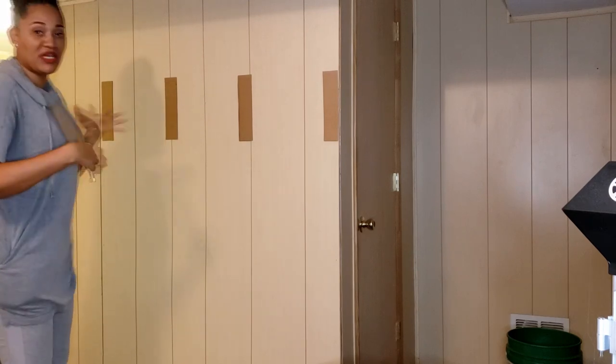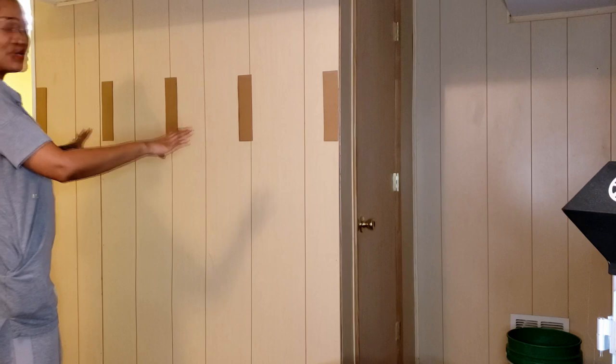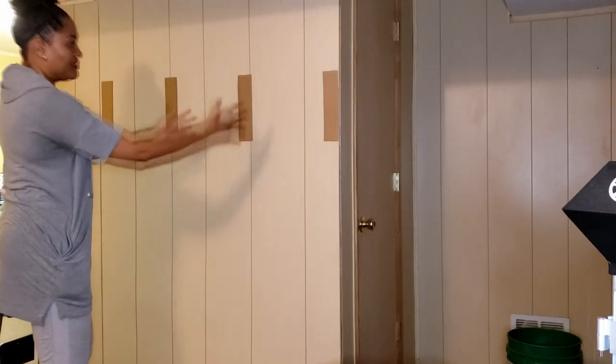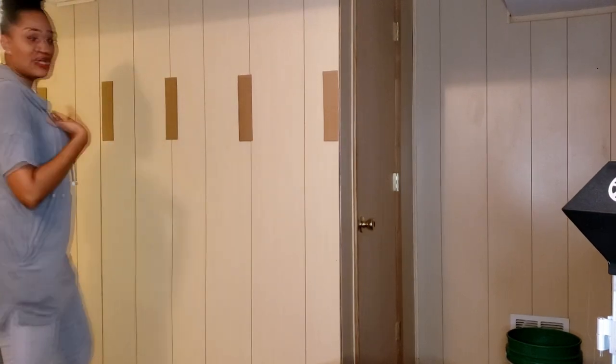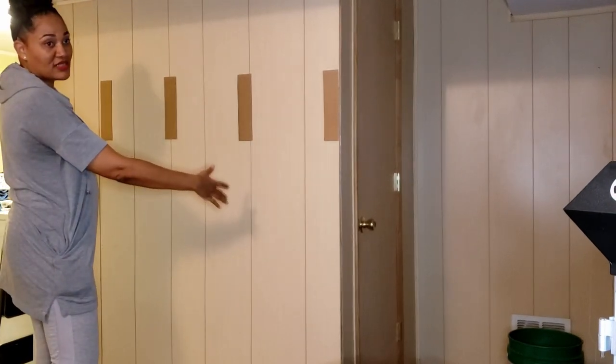Okay so for me for this wall this looks pretty even. If I had battens going all the way up and down with this spacing to me I would be very happy with this. Okay so that's how I did the vertical battens.